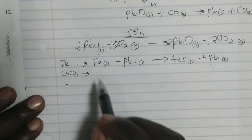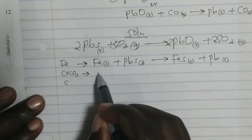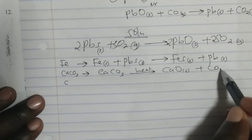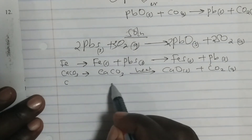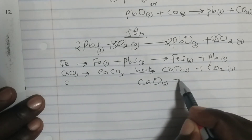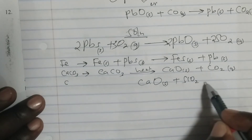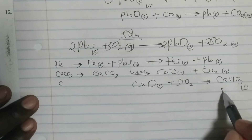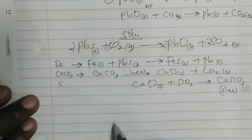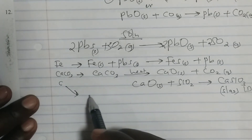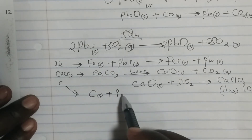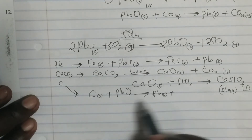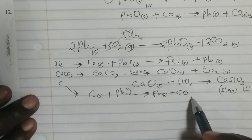We also have calcium carbonate. Calcium carbonate decomposes into calcium oxide and carbon dioxide (CO₂), which is a gas. The calcium oxide reacts with the earthy impurities, which is mainly silica, to form calcium silicate, commonly known as slag. We also have carbon — the purpose of carbon is to reduce the metal oxide produced from the roasting furnace into lead metal, and carbon monoxide (CO) is produced as a gas.